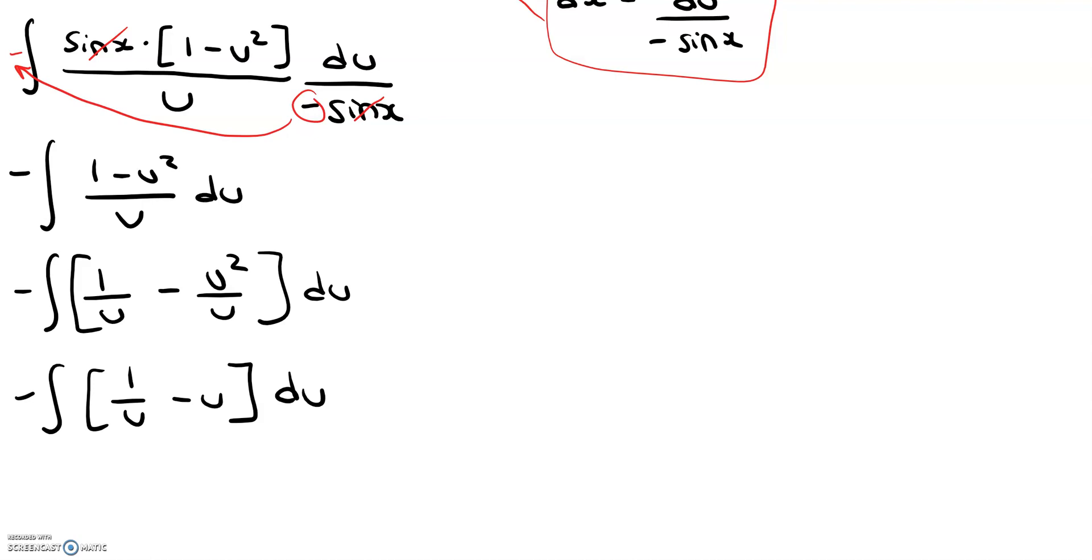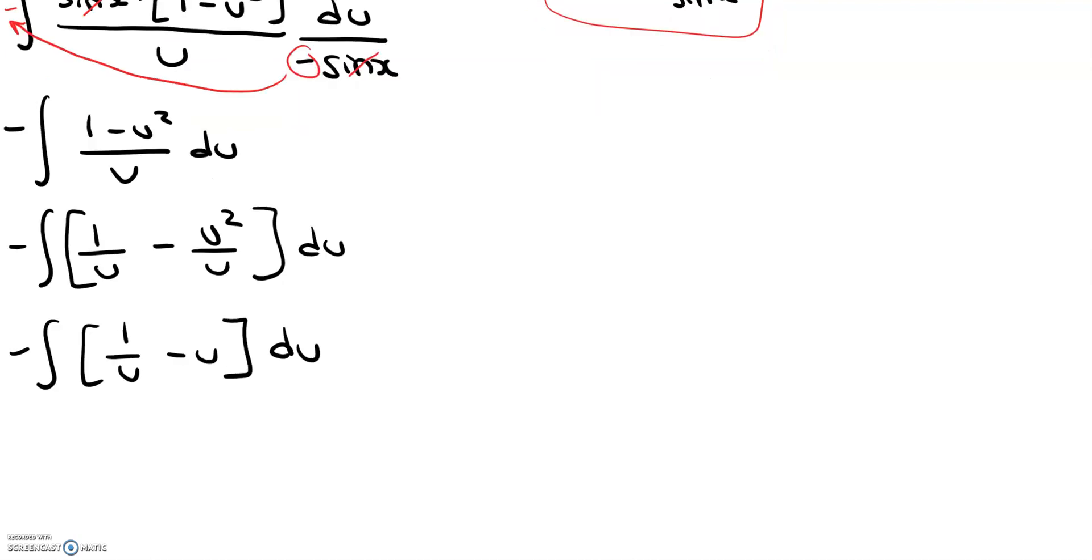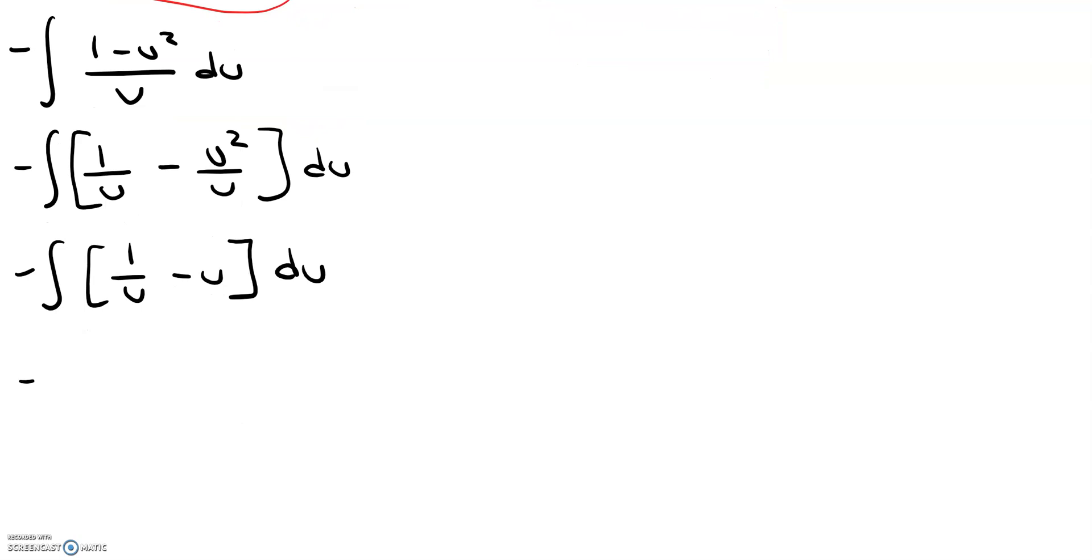Okay, so now that I've gotten to this point, I am ready to go and evaluate my integral. So when I do that, I get ln absolute value of u minus u squared over 2. Okay, so I can distribute my negative 1 now. So I get negative ln absolute value of u plus u squared over 2 plus c. Can't forget plus c.